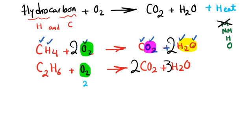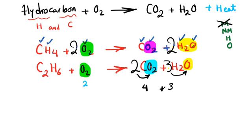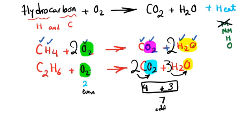Now balance oxygen. On the left we have two oxygen atoms. On the right: CO2 has two oxygen, multiplied by two gives four; H2O has one oxygen, multiplied by three gives three. So we have four plus three equals seven oxygen atoms on the right. Two on the left is even, seven is odd — we have to handle this.